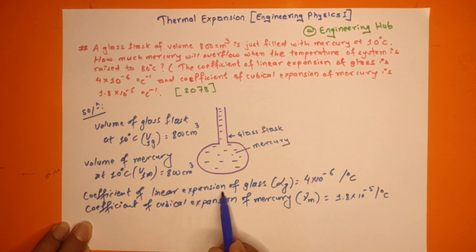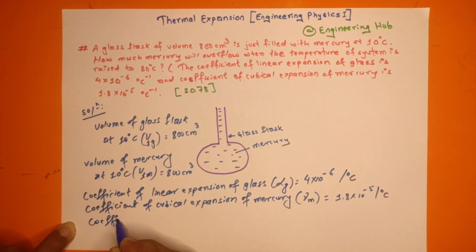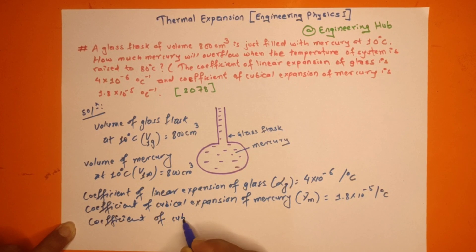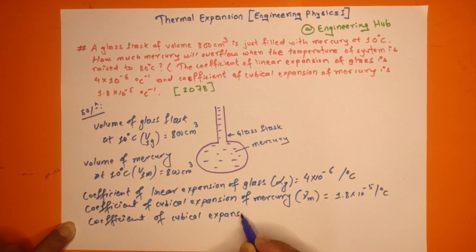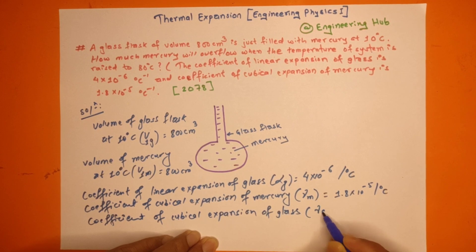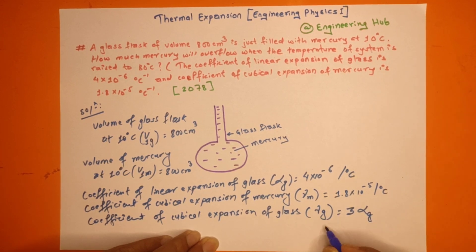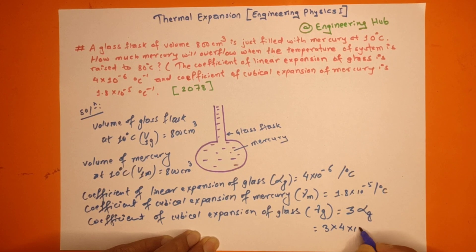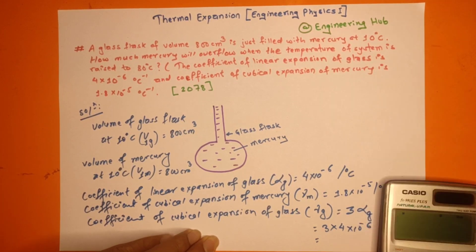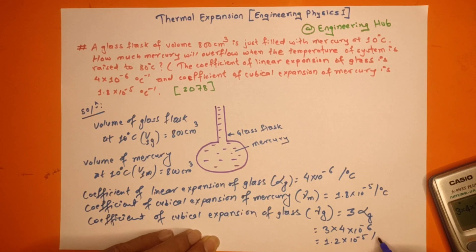For the cubic expansion of glass: using the relation gamma equals 3 alpha, gamma glass equals 3 into alpha, which is 4 into 10 to the power minus 6, giving gamma glass equals 1.2 into 10 to the power minus 5 per degree Celsius.